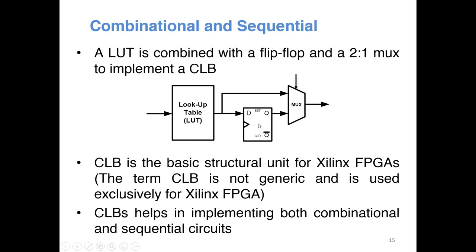In a circuit you have to build both sequential and combinational elements. So you take a lookup table and hook up a D flip-flop and a 2-to-1 MUX as shown. This particular architecture — one LUT, one D flip-flop, and one MUX — we call a CLB or Configurable Logic Block. This term is used by Xilinx, which is the largest manufacturer of FPGAs. The main competitor is Intel; they use their own term ALM (Adaptive Logic Module). This semester we'll be using Xilinx FPGAs, so remember the term CLB. A CLB enables you to implement both sequential as well as combinational circuits.